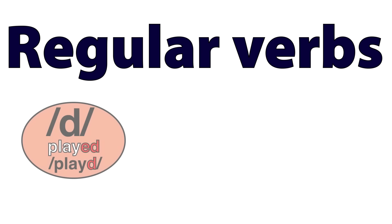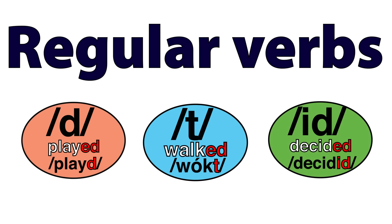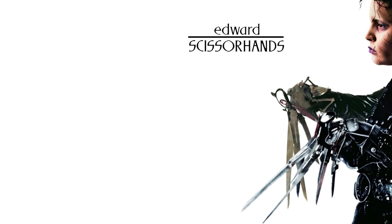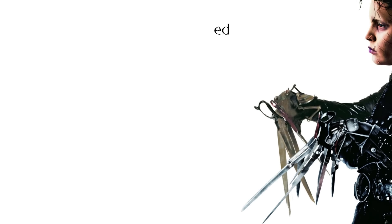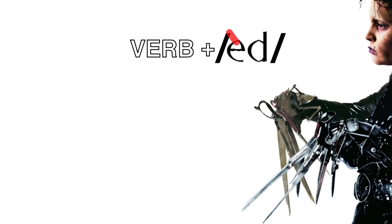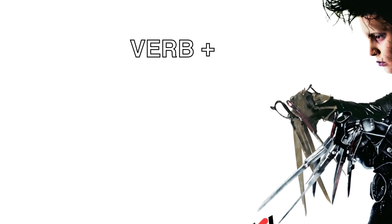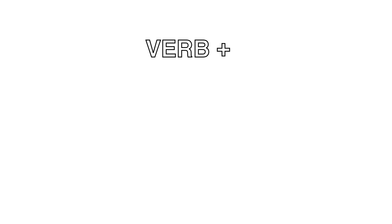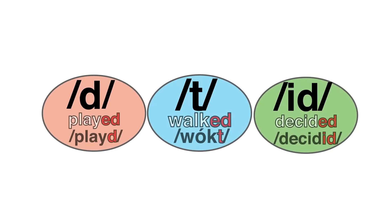Regular verbs — played, walked, decided. When thinking about the pronunciation of the past tense of regular verbs, think about Edward Scissorhands. Ed is short for Edward. Unfortunately, Ed does not exist in the pronunciation of any of the past tense of regular verbs. Sorry, Ed. Instead, the -ed ending in regular verbs is pronounced in one of three ways.